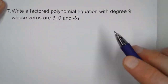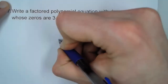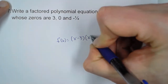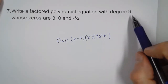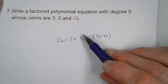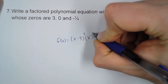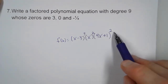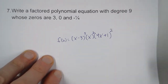For number seven, we want to write a factored polynomial equation with degree nine, whose zeros are three, zero, and negative one-fourth. So we have x minus three, times x, times four x plus one. It says degree nine but doesn't specify individual multiplicities — just whatever the multiplicities are, they have to add up to nine. So we could say something like five, two, and two. That's not the only right answer; as long as they add up to nine, the function fits the criteria.